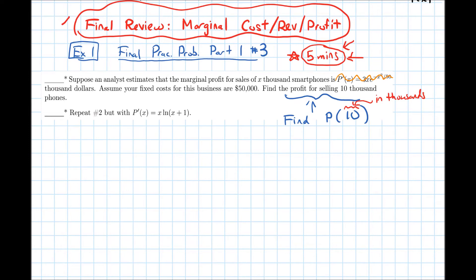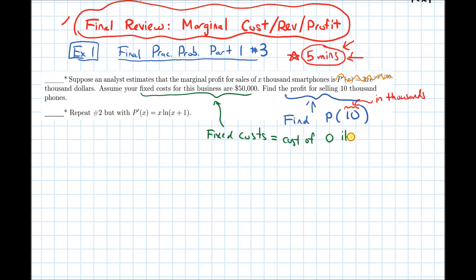This question also tells us some information about fixed costs. Remember that fixed costs equal the cost when there are zero items, so C(0). In this case, that's fifty thousand dollars, but since the units of money are thousands of dollars, we write 50 rather than fifty thousand.